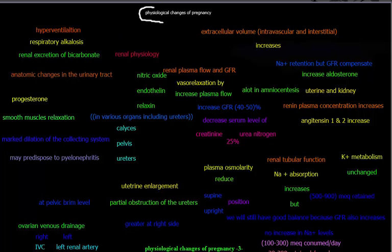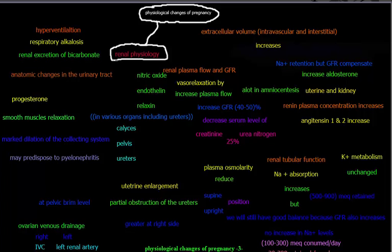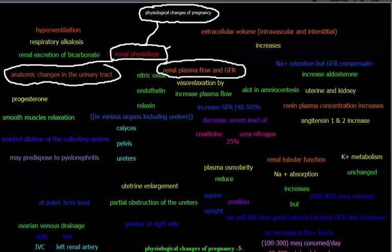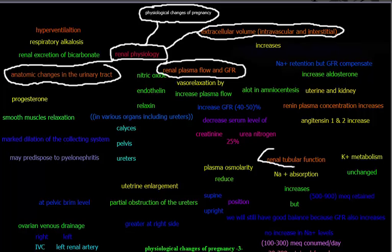This is the third video about physiological changes in pregnancy. In the previous two videos, I talked about cardiovascular system changes and respiratory system changes. In this video, I'm going to talk about renal physiological changes in pregnancy. The topics covered are: anatomical changes in the urinary tract, renal plasma flow and glomerular filtration rate, extracellular volume, intravascular and interstitial volume, and renal tubular function, including renin plasma concentration.